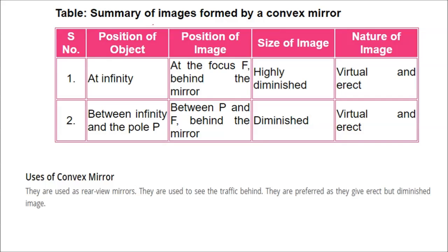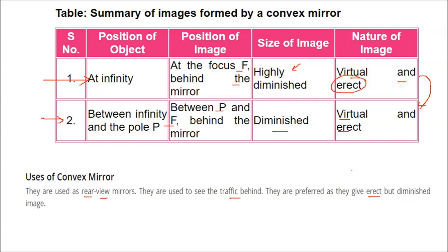Summary of images formed by convex mirror: when the object is at infinity, the image is at the principal focus behind the mirror — highly diminished, virtual, and erect. When the object is between infinity and the pole, the image is between P and F behind the mirror — diminished, virtual, and erect. Convex mirrors are used as rear-view mirrors to see traffic behind, because they give an erect image, though diminished.